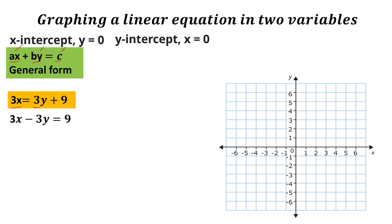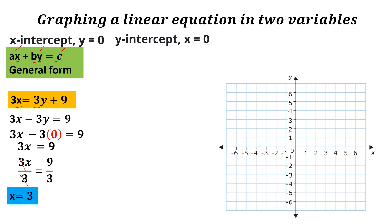Same thing, we need to set y to 0. So that is now 3x minus 3 times 0 is equal to 9. Since it becomes 0, we have 3x is equal to 9. Since we are getting the value of x, we divide both sides by 3. The result is x equals 3, and 3 is our x-intercept, giving us the point (3, 0). Let us now plot it on the Cartesian plane — the point (3, 0) is there. We are done with the x-intercept.